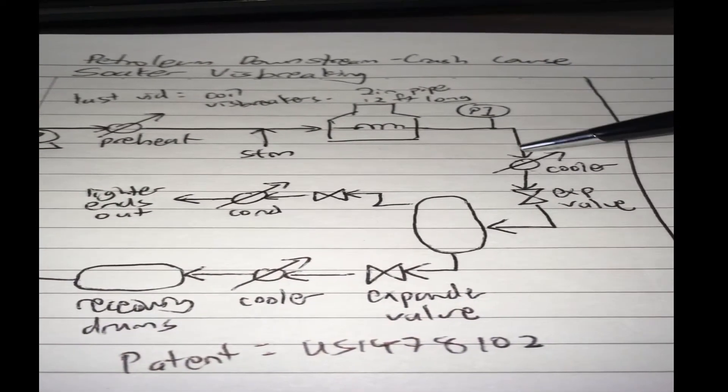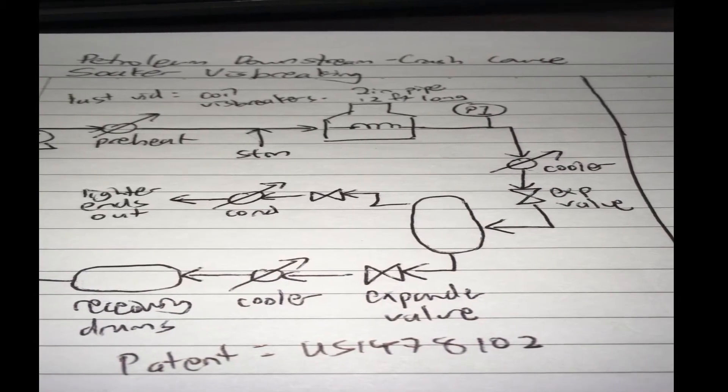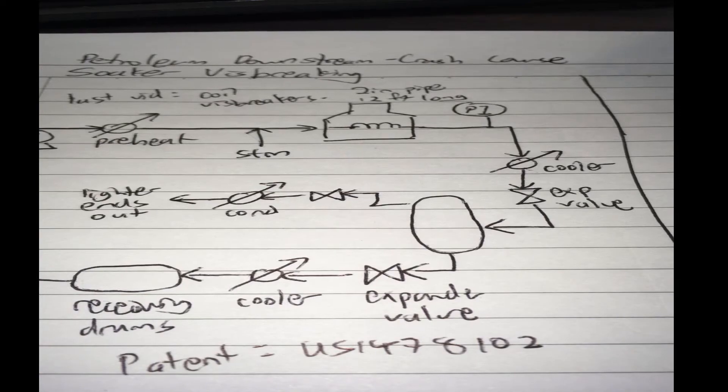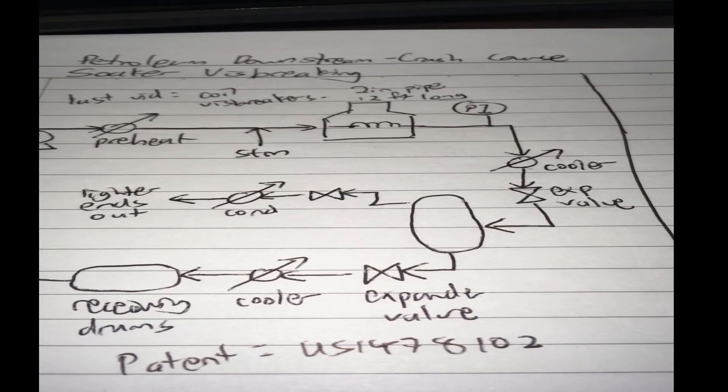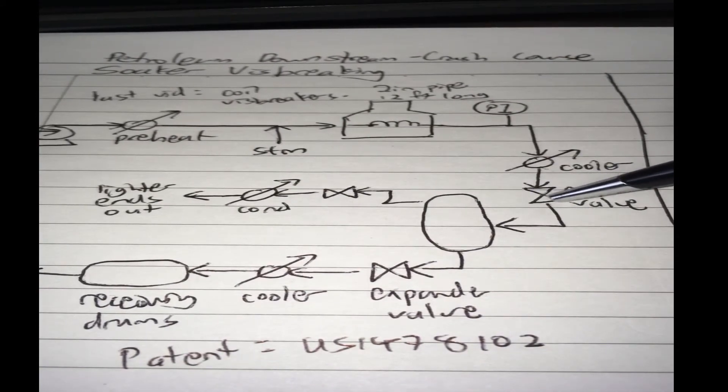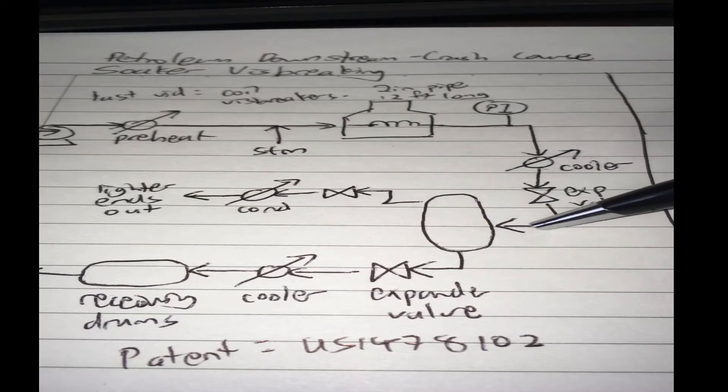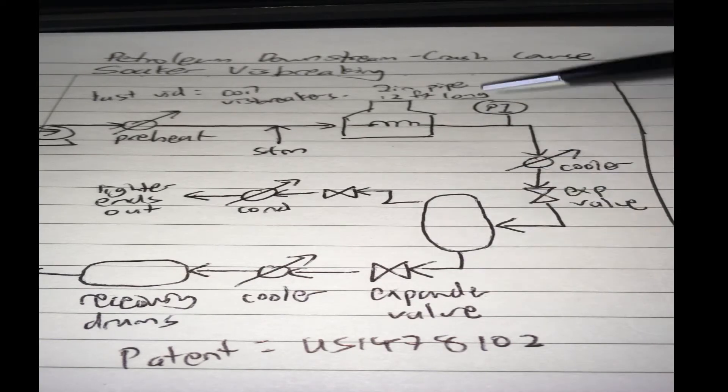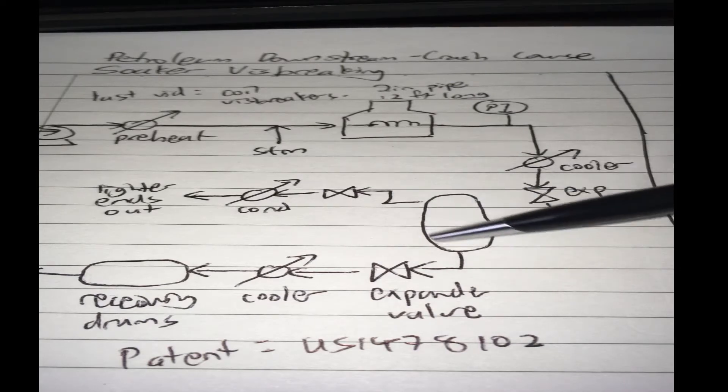Then it flows into a cooler where the reaction is quenched so the cracking stops. You have a pressure indicator to monitor the pressure, and then the higher pressure is partially relieved so the product can be separated in a separation vessel. In this case, it's a drum.